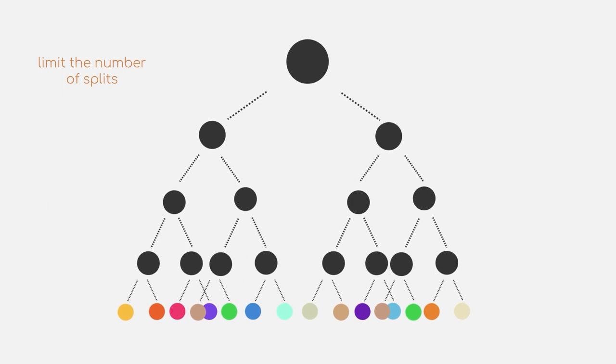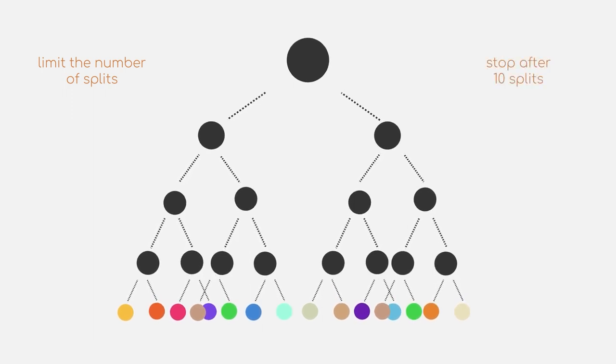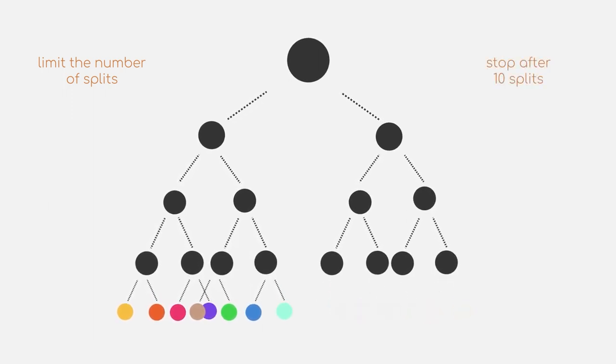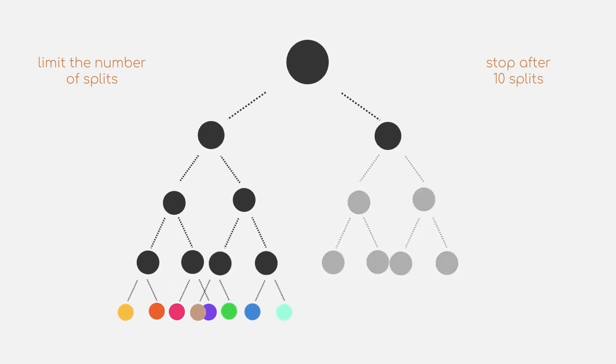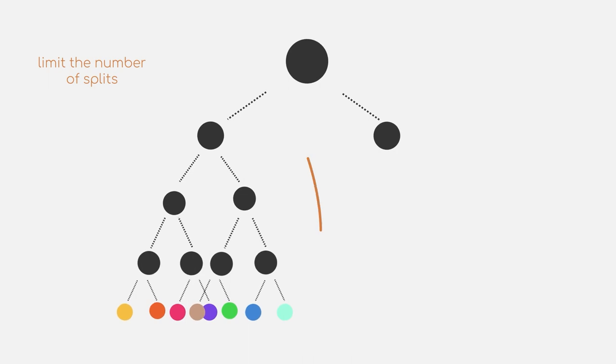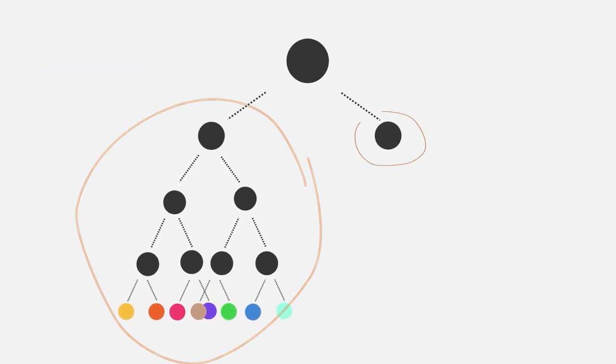As an example, we could just say, hey, let's stop after 10 splits. In some cases, however, this might lead to a very unbalanced tree, where one branch of the tree is basically taking all of the splits, and the other one is left with just a single leaf.